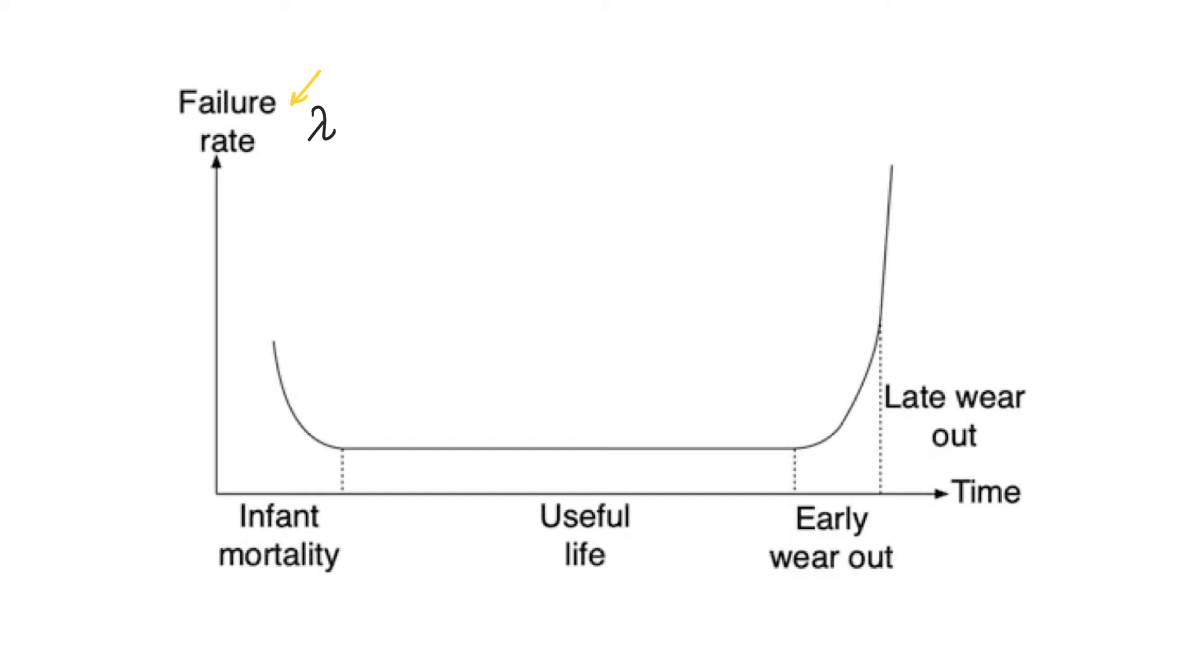So this graph with the tub-like shape is a very well-known graph in terms of reliability and it shows the phases of a system or a chip or a component when it's introduced to market. In this case think of it as the shape of the failure rate of a chip that we release to market. We designed the microchip and we have released it and this is how the failure rate of this system changes over time.